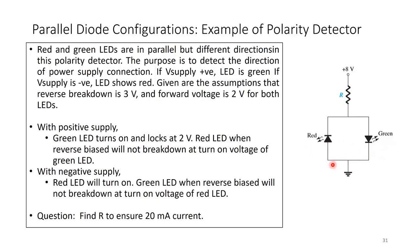With positive supply, the green LED turns on and locks the voltage at 2 volts. The red LED has a reverse breakdown of 3 volts, so it will not break down at 2 volts — the voltage is locked below its breakdown threshold.